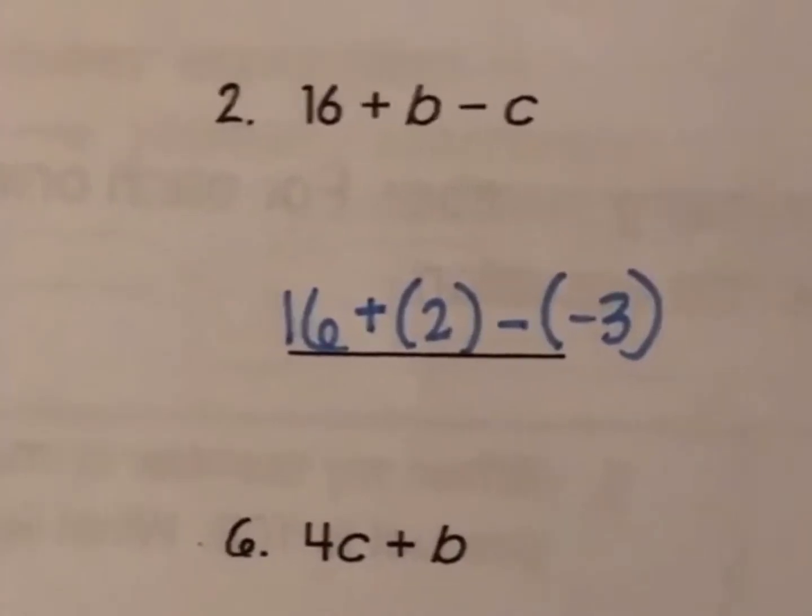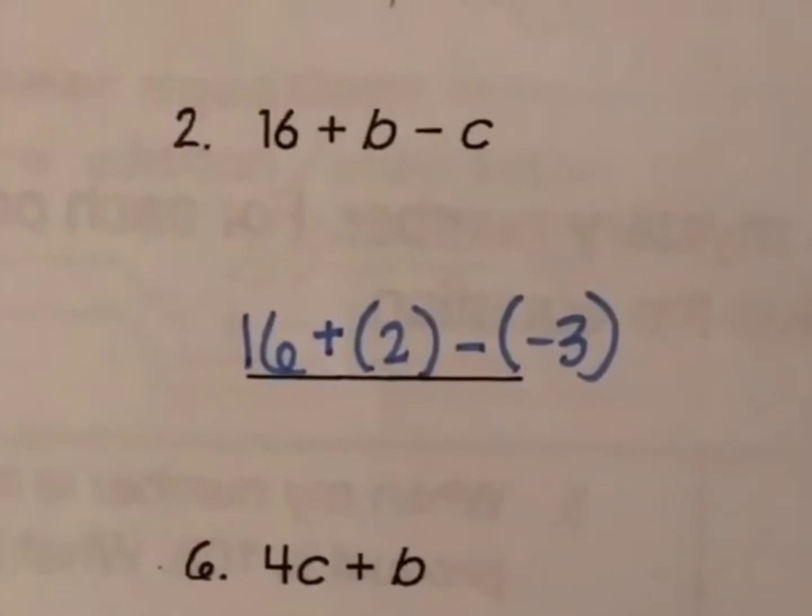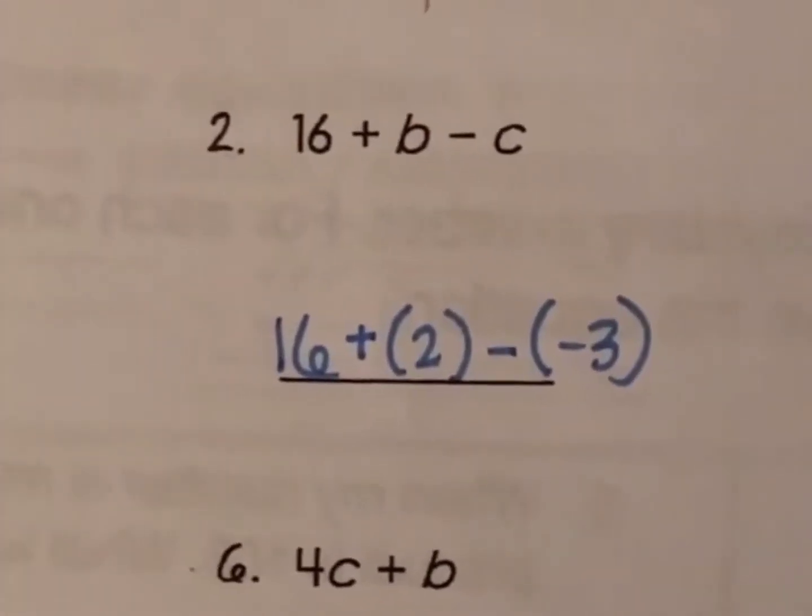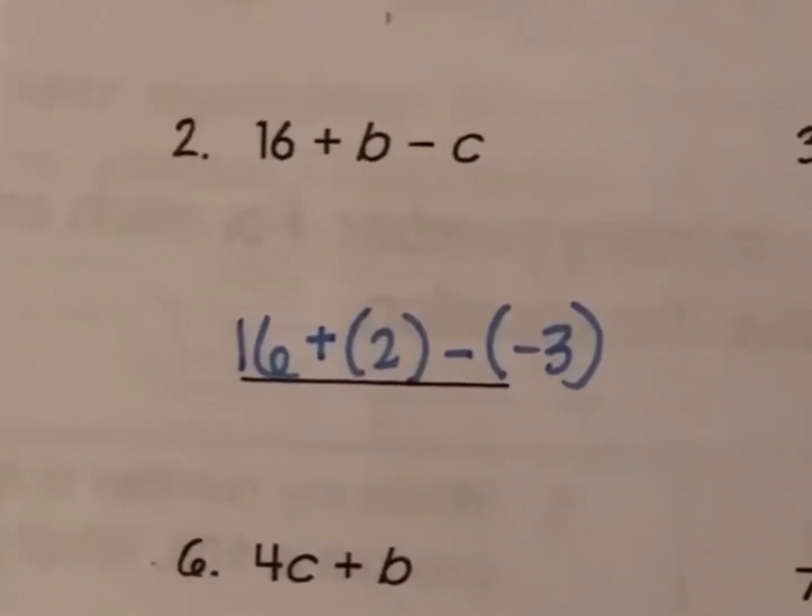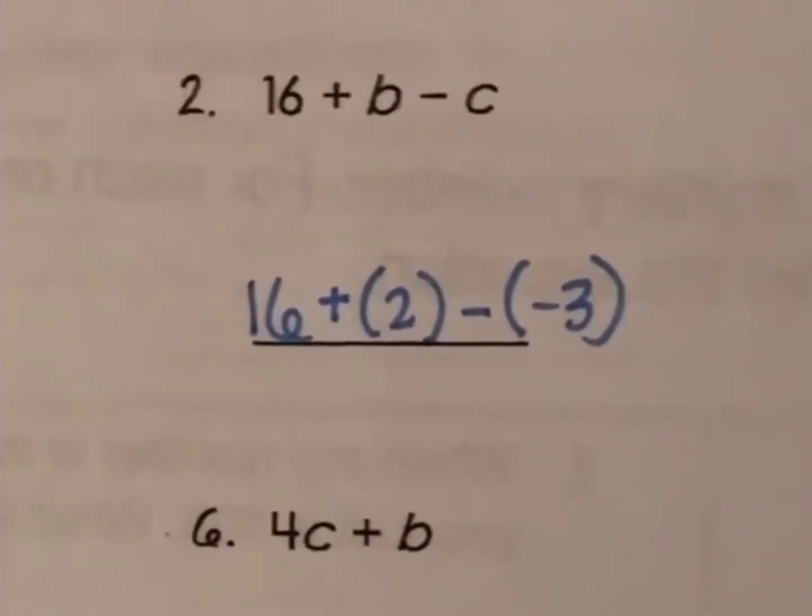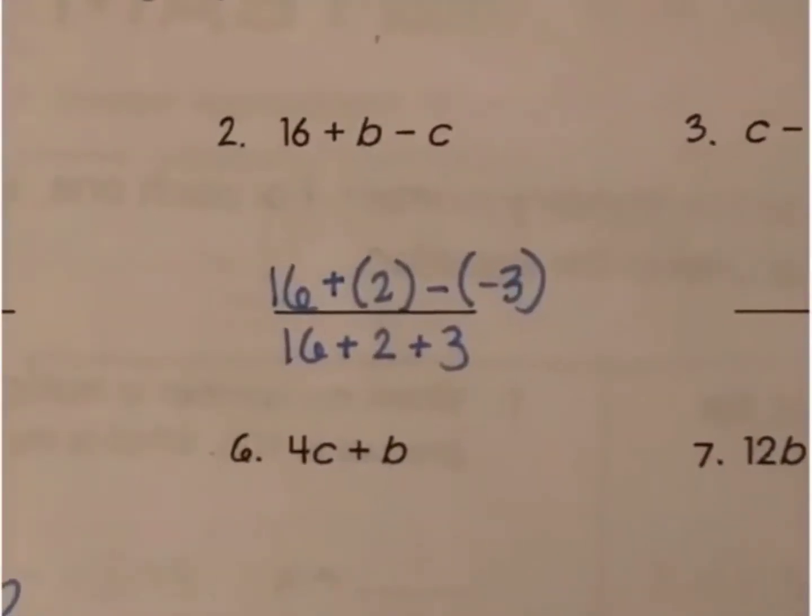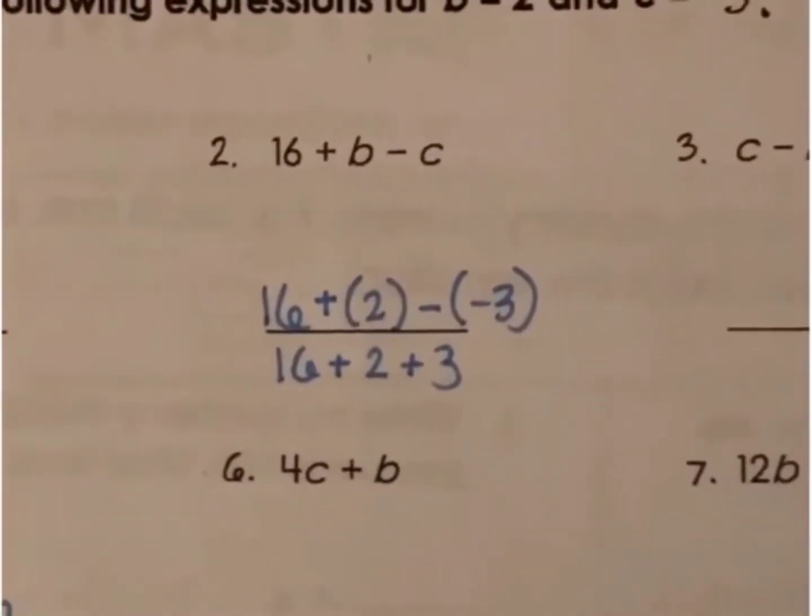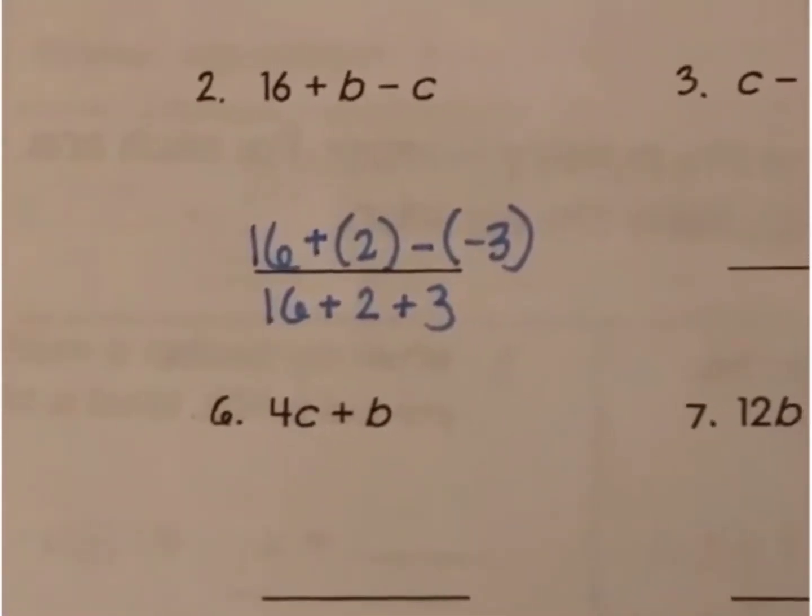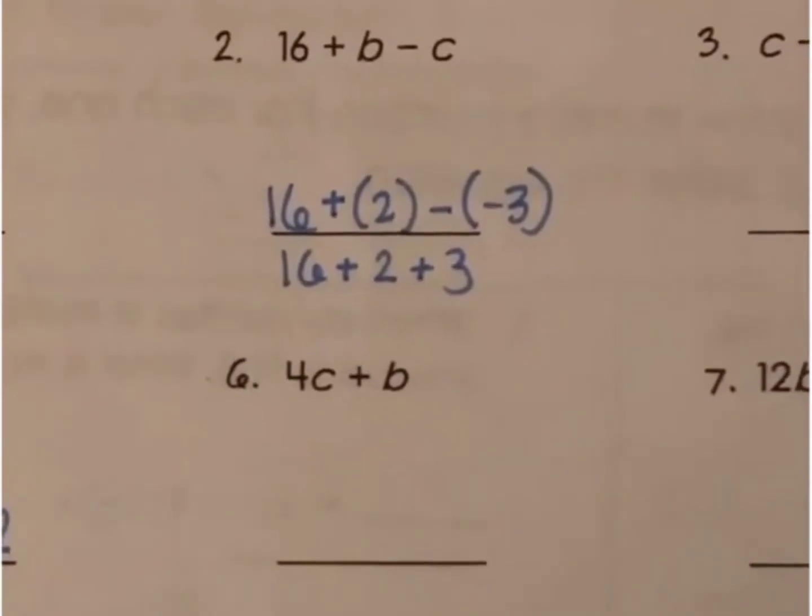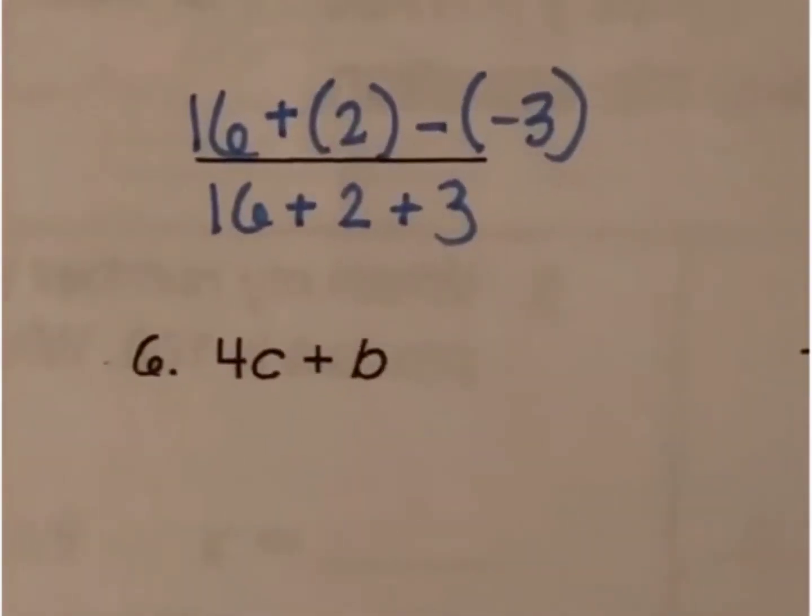So, like I said, you do not need to use the parentheses, but I'm going to write mine in parentheses just so that you're used to seeing it this way. So with number 2, when I substitute b for 2 and c for negative 3, I end up with 16 plus 2 minus negative 3. When you simplify this further, the minus the negative 3 becomes plus 3, and you end up with 16 plus 2, which is 18, plus 3 equals 21. So your final answer for number 2 is 21.